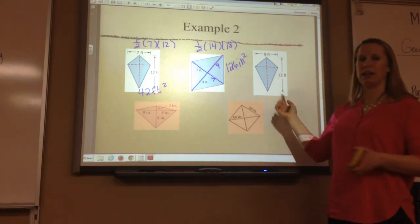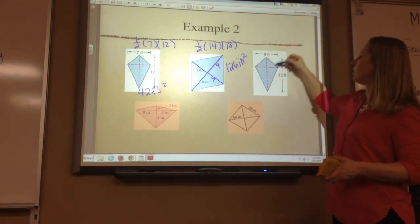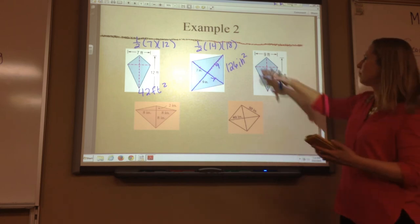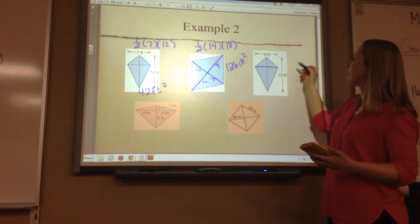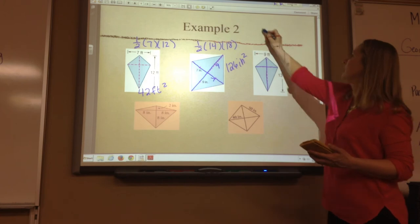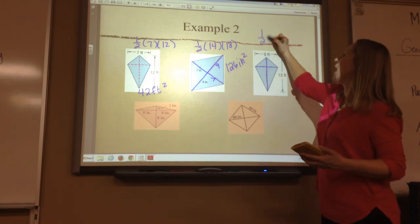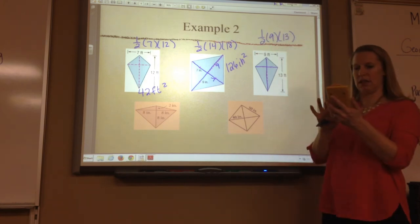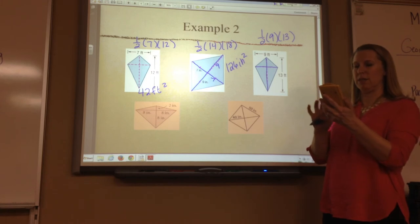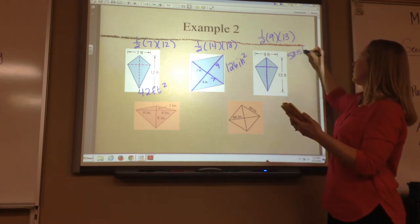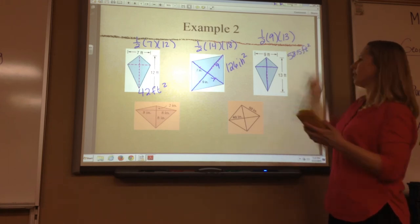This is another kite — just multiply the diagonals and divide by two. This diagonal is nine, this diagonal is thirteen. So one-half nine times thirteen, divide by two — fifty-eight point five feet squared.